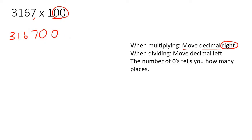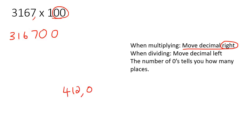Some of you are thinking: Kevin, I thought we don't like to keep zeros at the end. That is only when you have zeros after a decimal. For example, 412 comma 0600 — we do not like to have those trailing zeros because they come after the decimal.